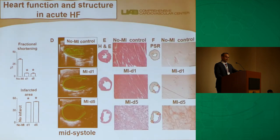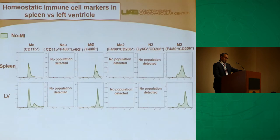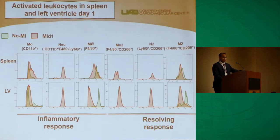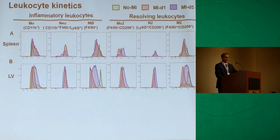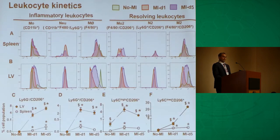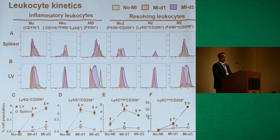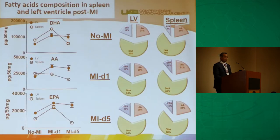After MI, more than 40–50 percent of the area is infarcted and acute heart failure is structurally evident. In the naive, non-activated state, monocytes show no inflammatory markers. In response to MI at day one, both inflammatory and resolving responses are activated simultaneously in the spleen and LV, more pronounced in the LV. By day five, there is marked activation of neutrophils and macrophages, and the temporal kinetics show activated leukocytes are more pronounced in the LV.